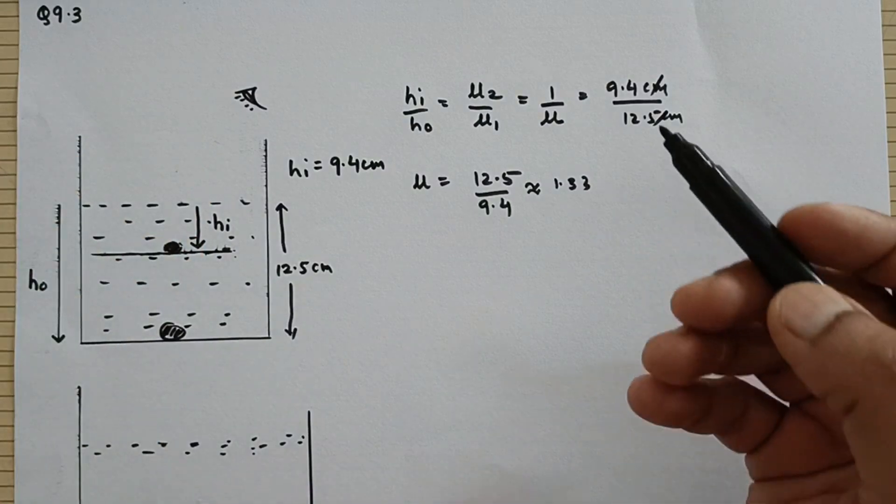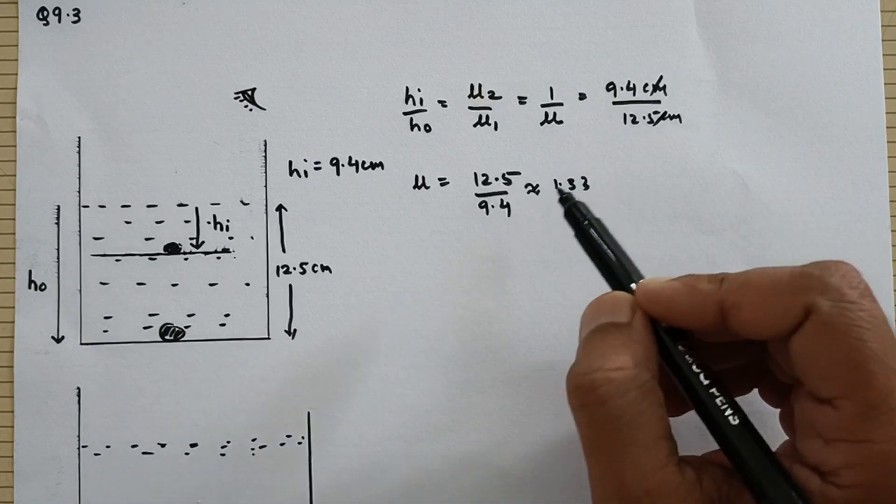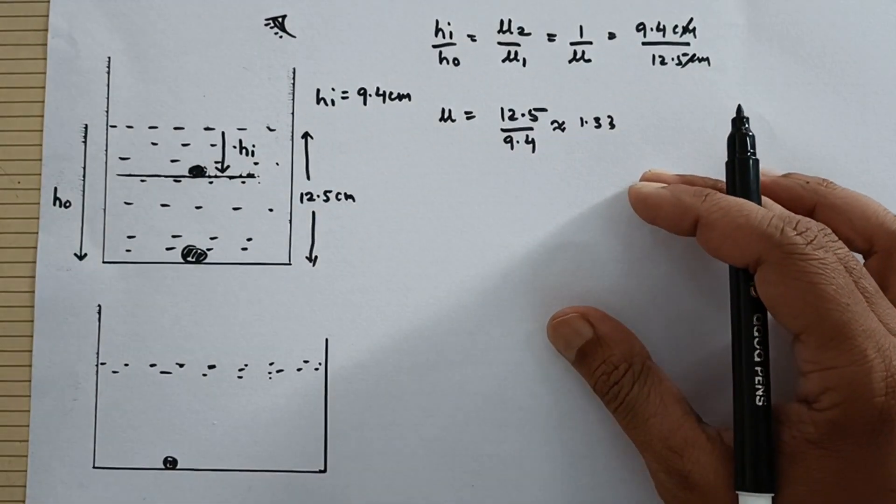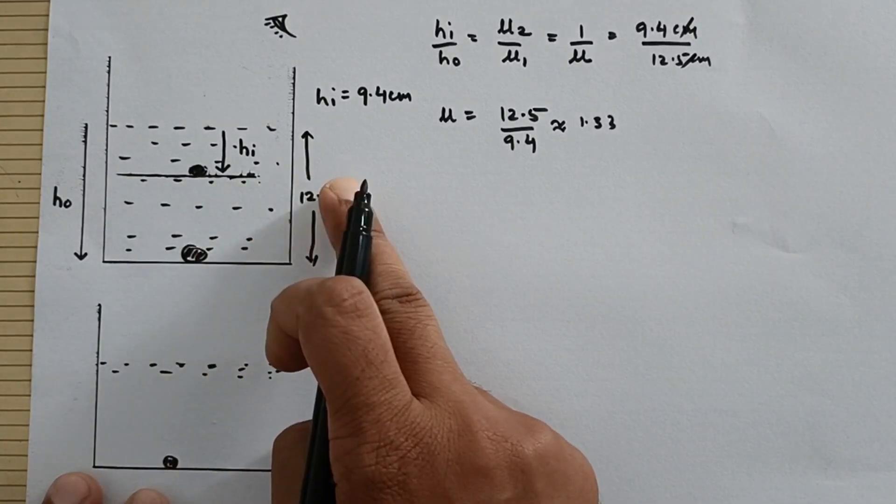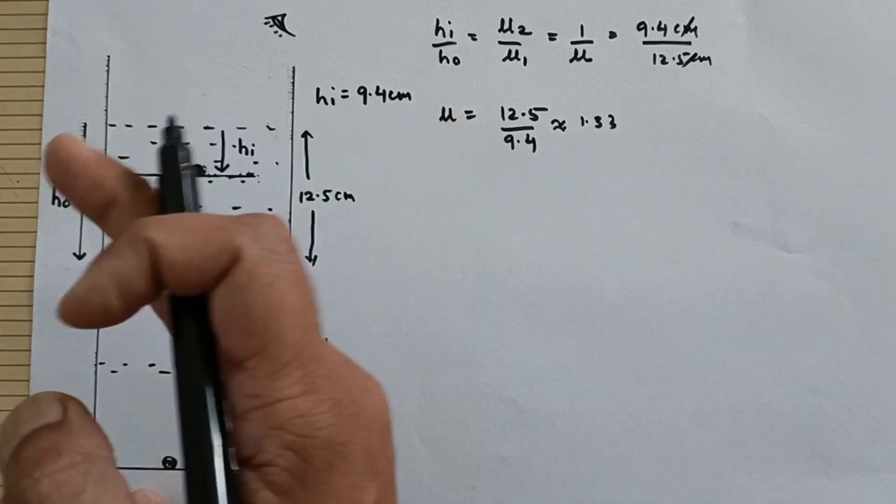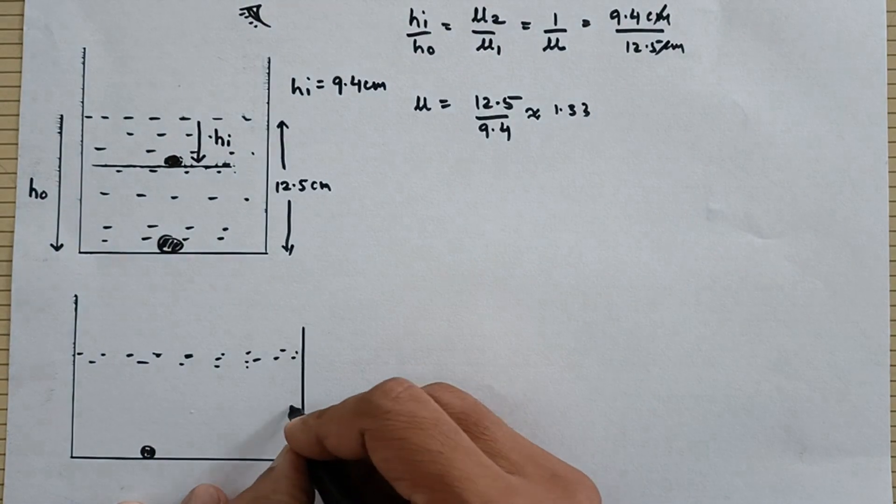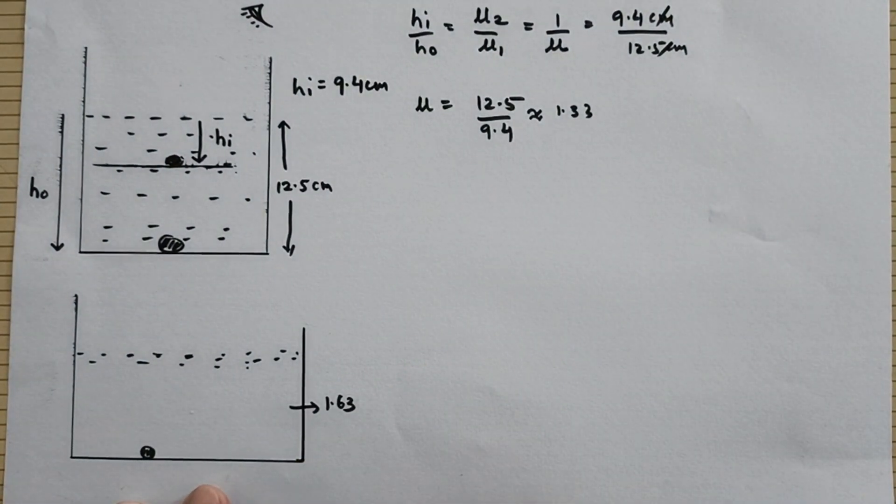Which means that when the ray of light comes from air into water its speed decreases by 1.33 times and the wavelength also decreases by 1.33 times. Now in the next part of the question they are saying that if we replace this water with some different liquid which is even more denser than the water and its refractive index is given as 1.63.